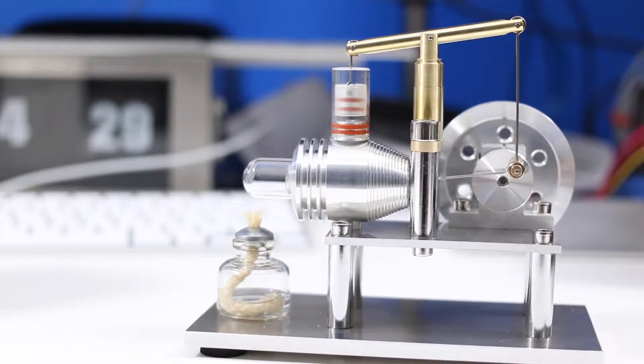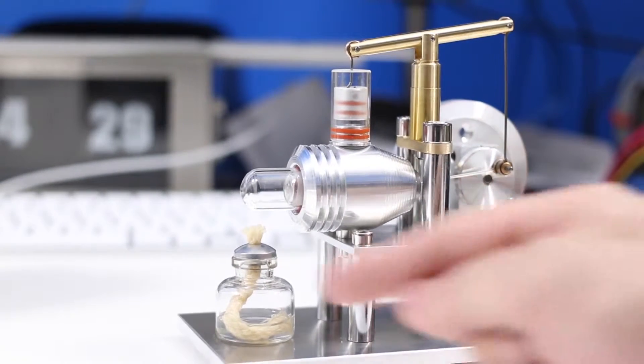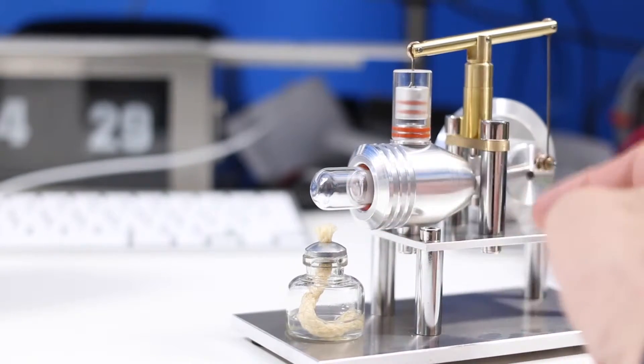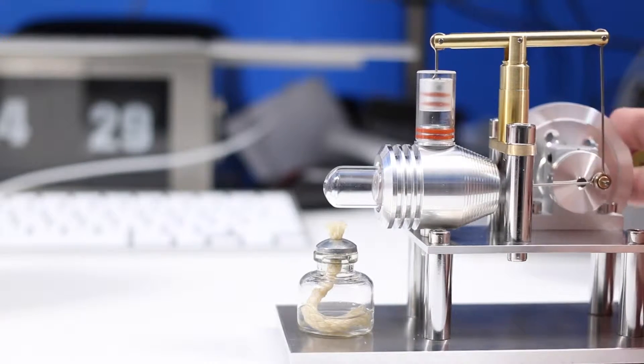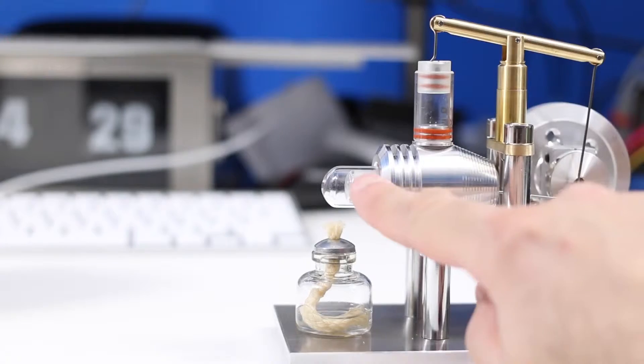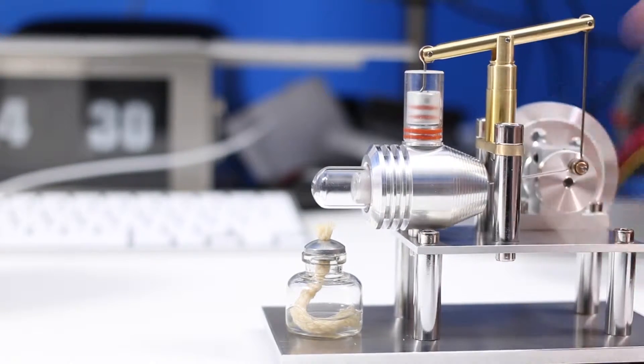If you're not familiar with a Sterling engine, it's an external combustion engine, which means we create heat on the outside, not inside the cylinder. It has a cylinder right in there. If I spin the flywheel, you can see the cylinder come out over here and go back. So the flywheel is going to bring that in and out.